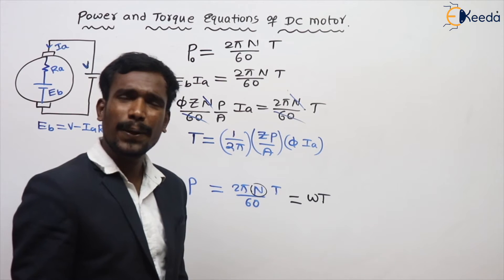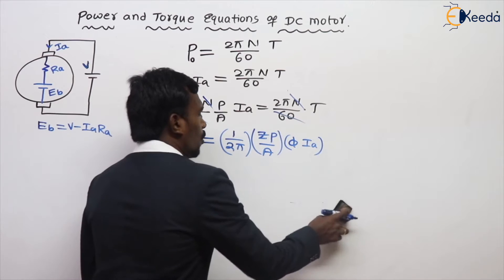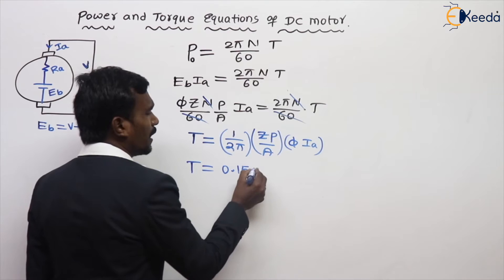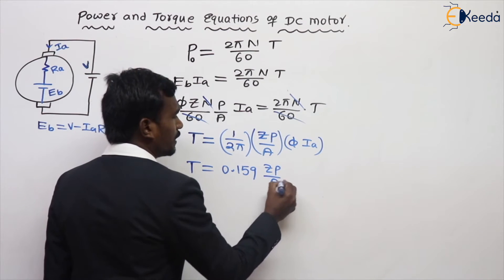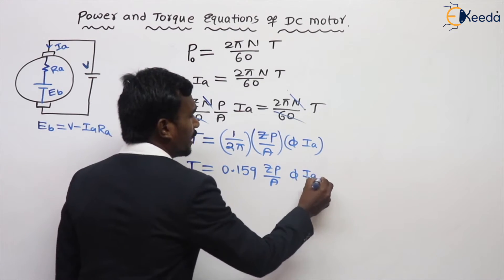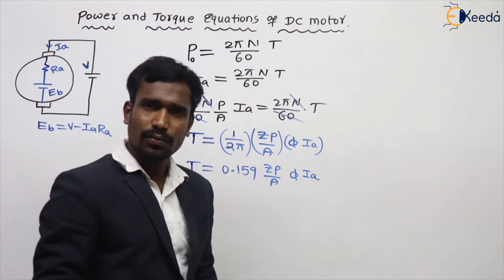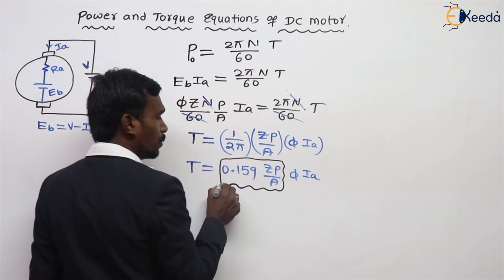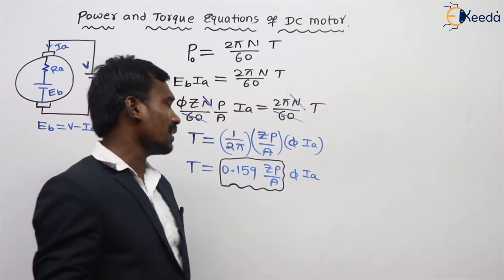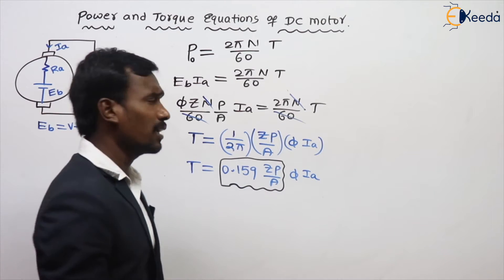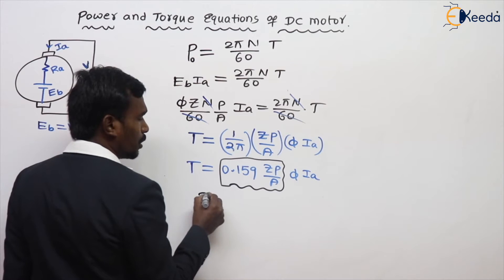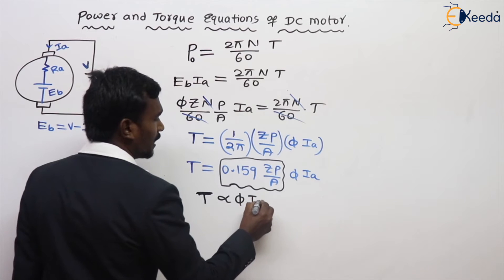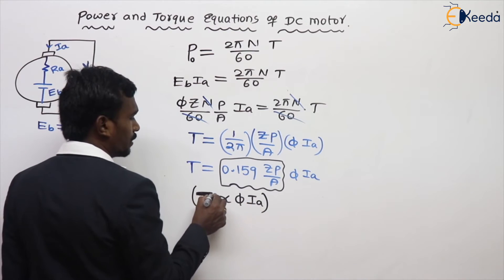This is the torque equation. The value of 1 by 2 pi is 0.159, so T equals 0.159 times ZP by A times phi into IA. Since Z, P, and A are all constants for a given DC motor, torque T is directly proportional to phi into IA. This is a very important result.